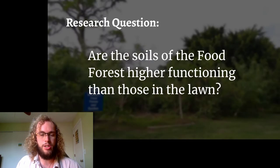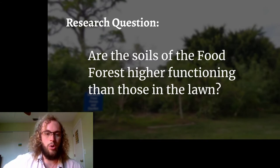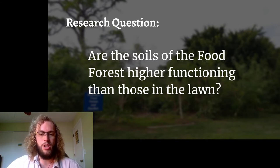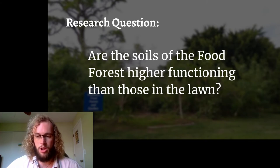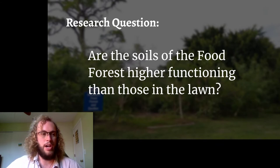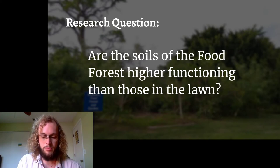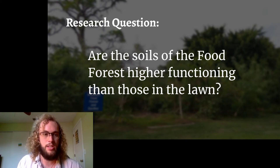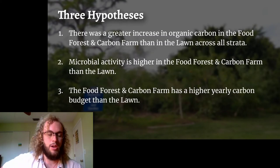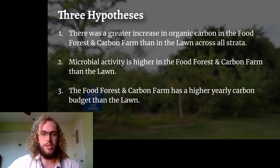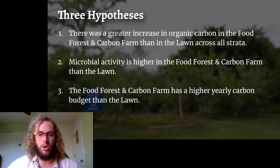My overall question about the food forest and lawn areas was if the soils of the food forest were higher functioning than those in the lawn. I was curious if the soils of the food forest were better able to provide plants with the conditions that they needed to thrive. To help inform my answer to this research question, I formed three testable hypotheses about the soils. My first was that there was a greater increase in organic carbon — which is the type of carbon most accessible to plants and other organisms — in the food forest and carbon farm than in the lawn across all strata of soil. Strata are the different layers of soil.